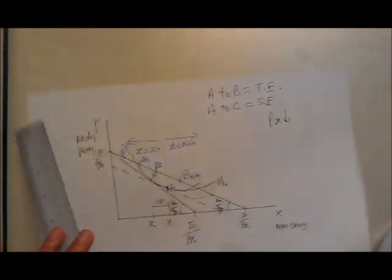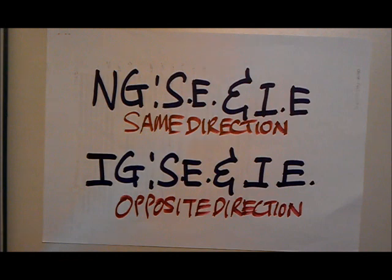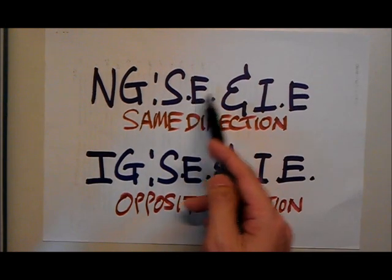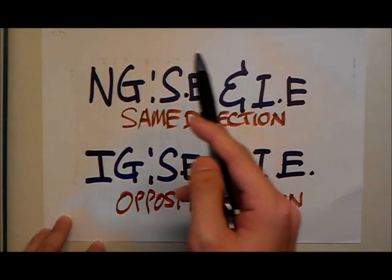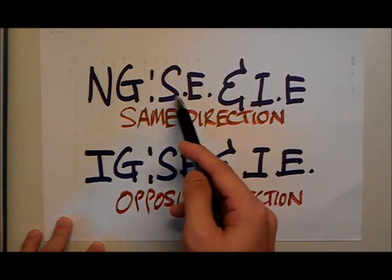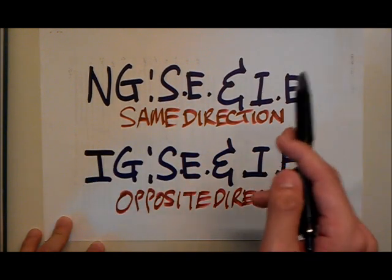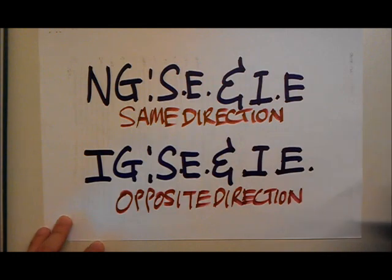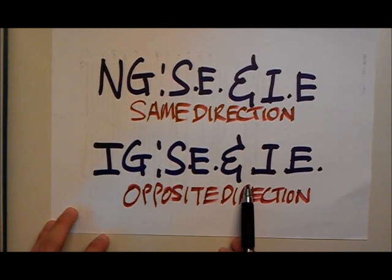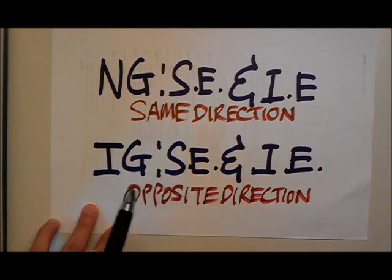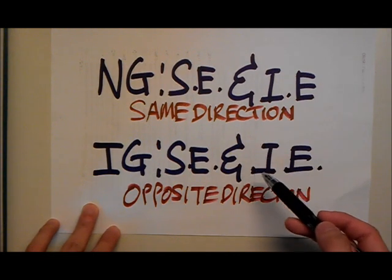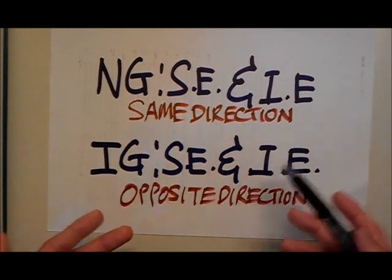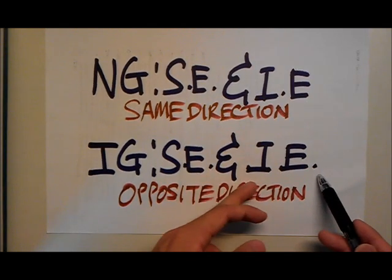Now we can conclude that for a normal good, the substitution effect and income effect move in the same direction. If price drops, the substitution effect moves to the right, and we expect the income effect to move right as well. For an inferior good, it's different—substitution effect moves in one direction, income effect in another. For a Giffen good, your income effect will be larger than your substitution effect.